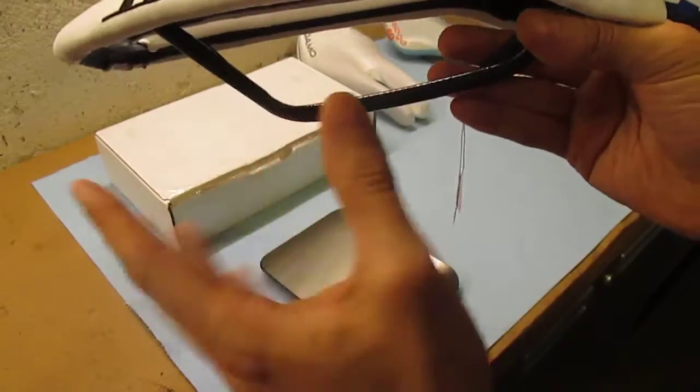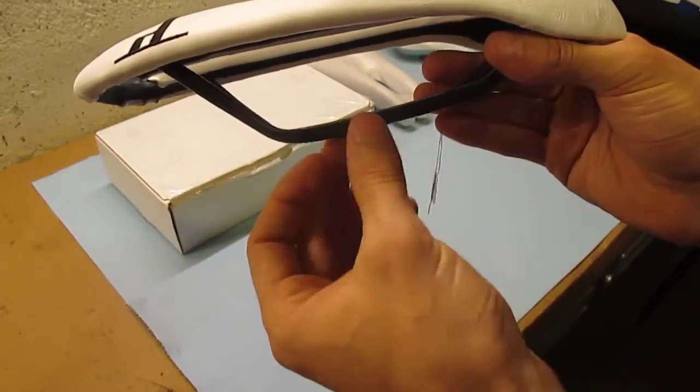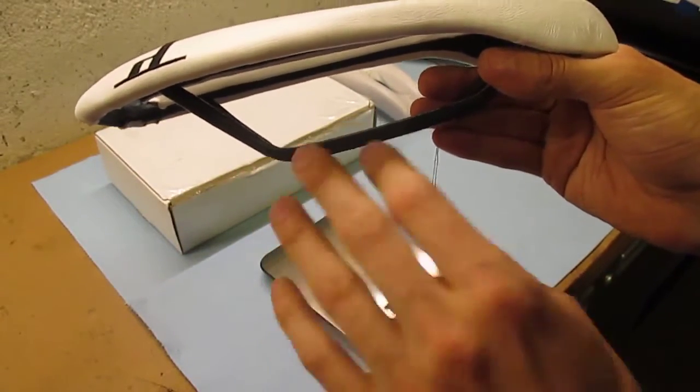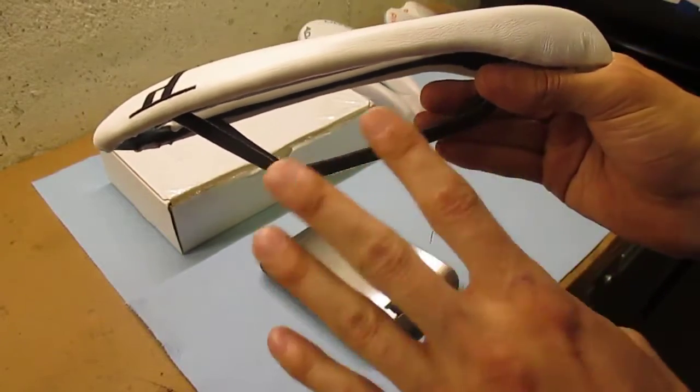A lot of carbon rails, or some saddles that have carbon rails use ovalized rails. These are not oval, these are just standard round rails.